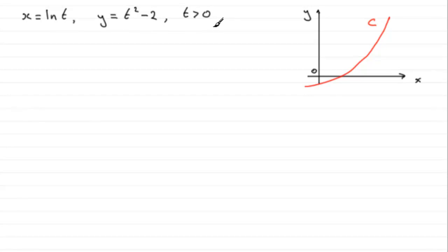And what we've got to find is an equation for the normal to the curve C at the point where t equals 3.